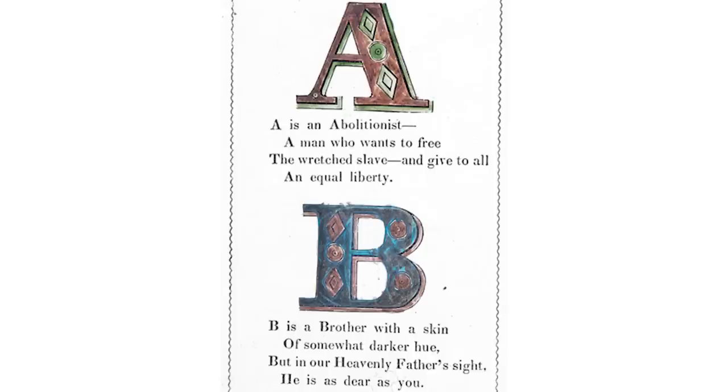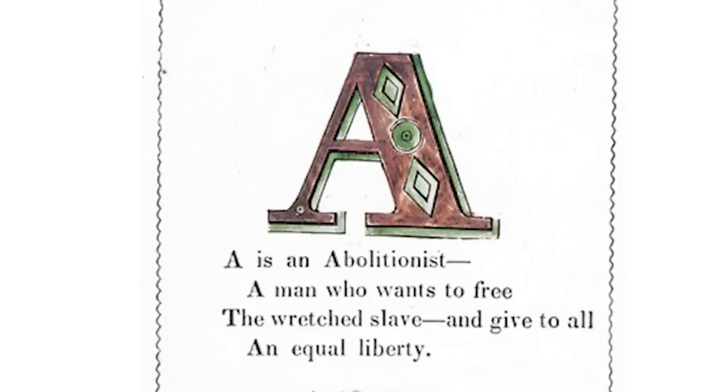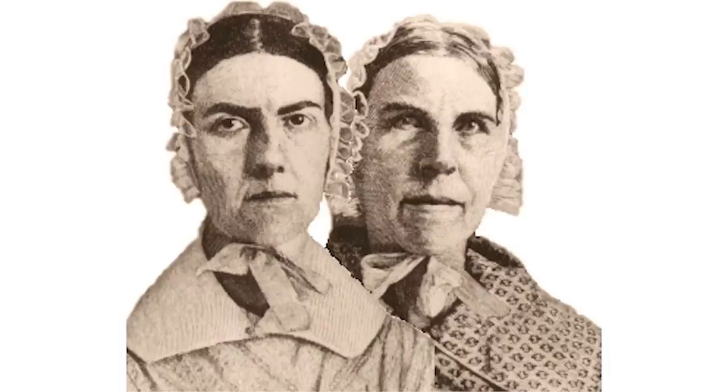Abolitionism also used other methods — here's a little primer they circulated in schools: "A is an abolitionist, a man who wants to free the wretched slave and give to all an equal liberty," and on and on. The abolitionist movement also spawned the very early movement for women's rights. The key early advocates here are the Grimke sisters — great agitators on behalf of the rights of women to participate fully in public life, to give speeches, to circulate petitions, to be part of the political system from which they were largely excluded.